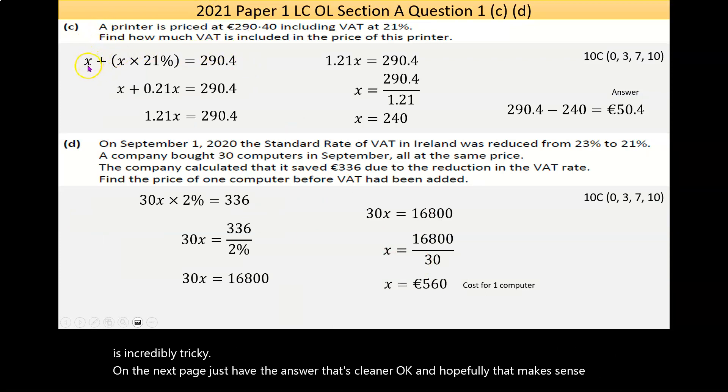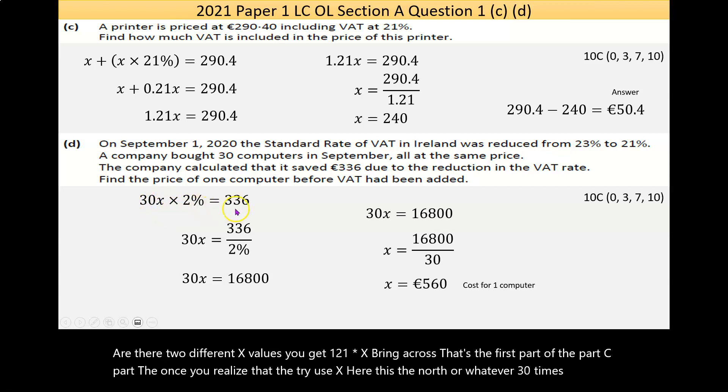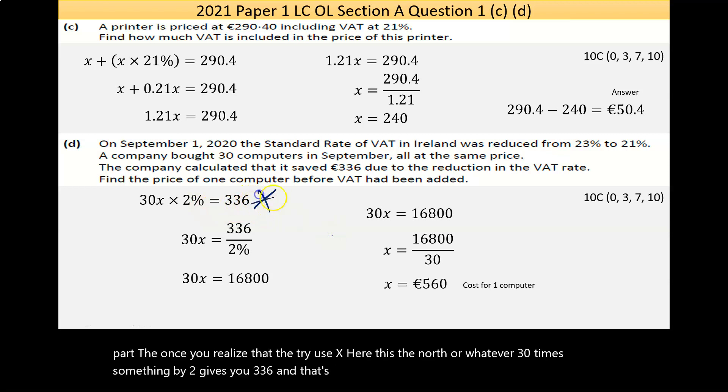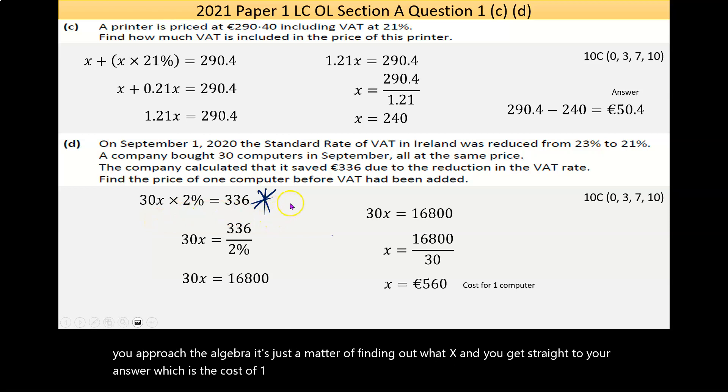In part C we had the price of laptop plus 21% of the price gives you the full amount. Do that little simplification there - that's the same thing as 0.21, add the two different x values, you get 1.21 times x, bring it across, that's the first part there. Part D, once you realize that 30 times something by 2 percent gives you €336, and that's the core. Once you've that done, whatever way you approach the algebra, it's just a matter of finding out what x is, and you get straight to your answer which is the cost of one computer.